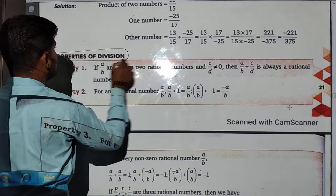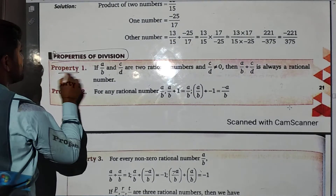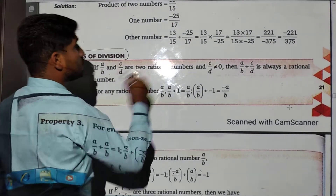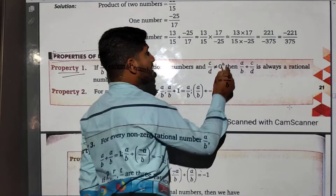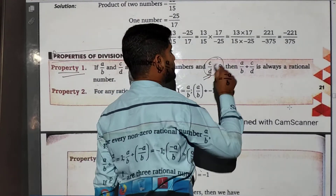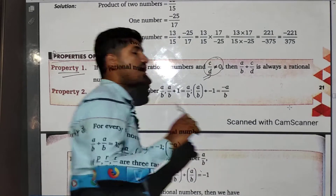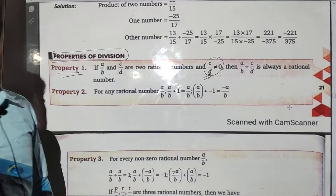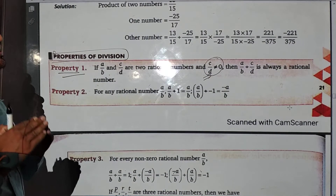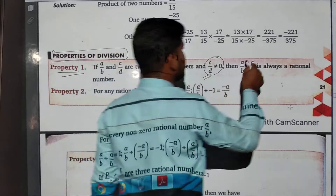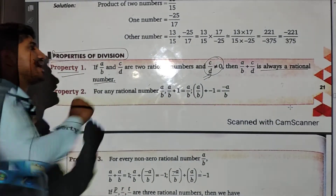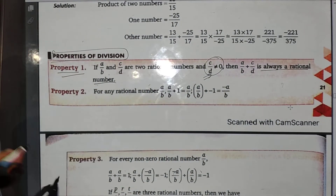Now we will see some properties of division of rational numbers. The first property: if a/b and c/d are two rational numbers and c/d is not equal to zero — always remember c/d must not equal zero — then a/b divided by c/d is always a rational number.